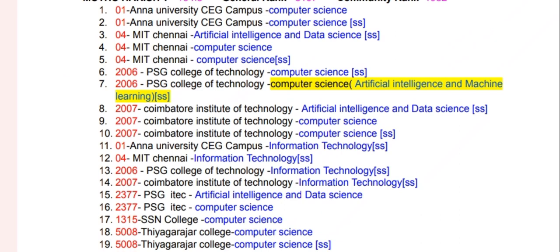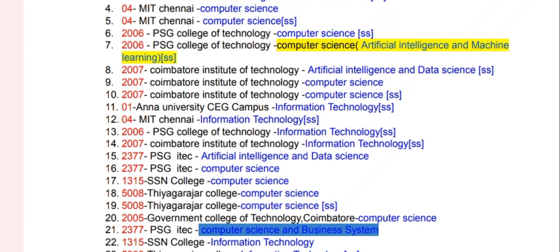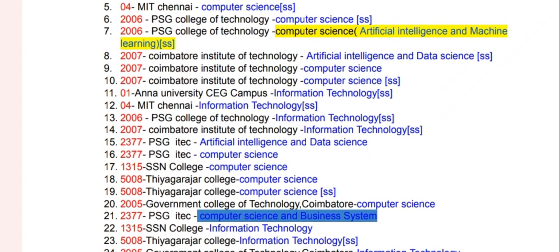We have a computer science SS. SS is a self-supporting course. If you take a lot of courses, you can use a lot of fees. You can also use artificial intelligence to self-finance. With MIT and PAG College of Technology, computer science and self-finance — this is SS, that is self-finance fees. That is the Institute of CIT.